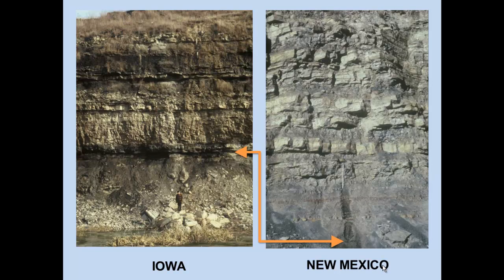These are the Pennsylvanian cyclothems I worked on. You can see the black shale here, and this is the same black shale out in New Mexico. It's the same eustatic cyclothem — you can demonstrate this by biostratigraphic control; it has the same offshore fauna in it. It's a little better developed in Iowa because this is probably a little farther up on the slope toward the Pedernal uplift. It's the same eustatic cycle over 800,000 kilometers.